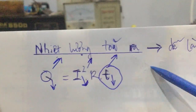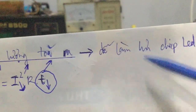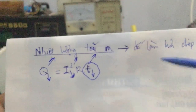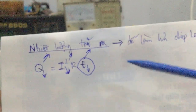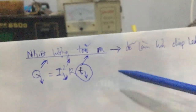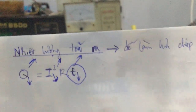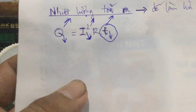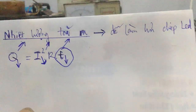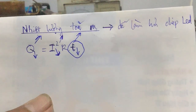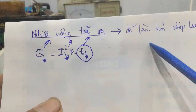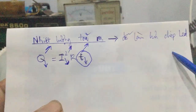Nhiệt lượng tỏa ra sẽ dễ làm hư chip LED bên trong, vì chip LED là linh kiện điện tử. Nên nó chịu tác dụng của nhiệt độ - nhiệt độ càng lớn thì tuổi thọ của chip LED càng giảm. Điều này dễ làm hư chip LED bên trong, làm cái đèn mau hết tuổi thọ.